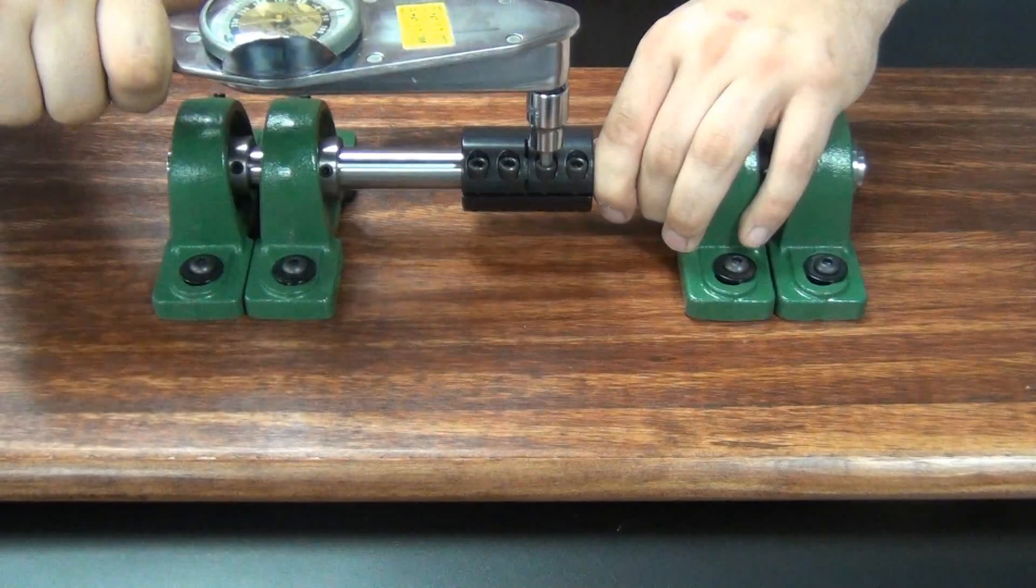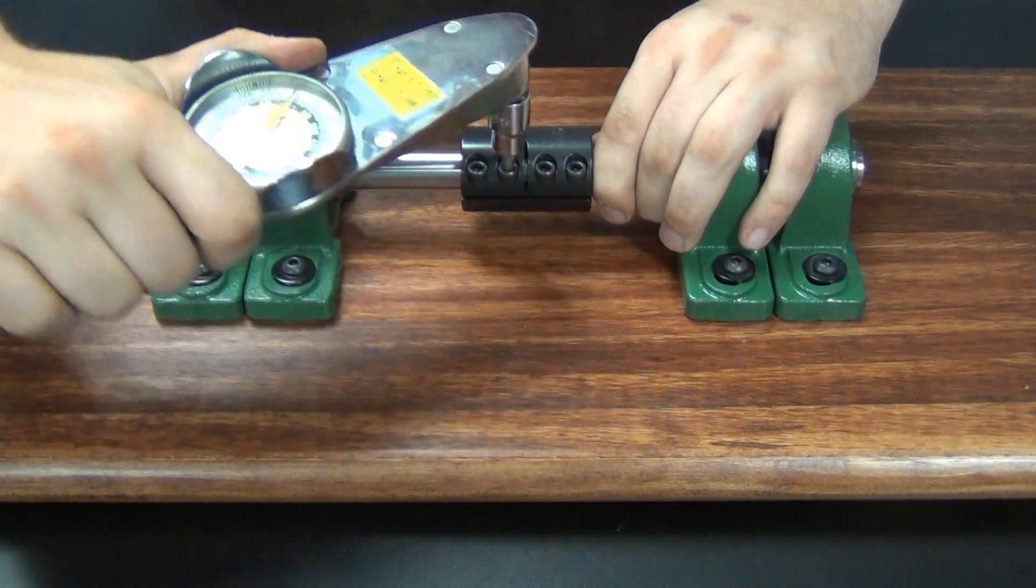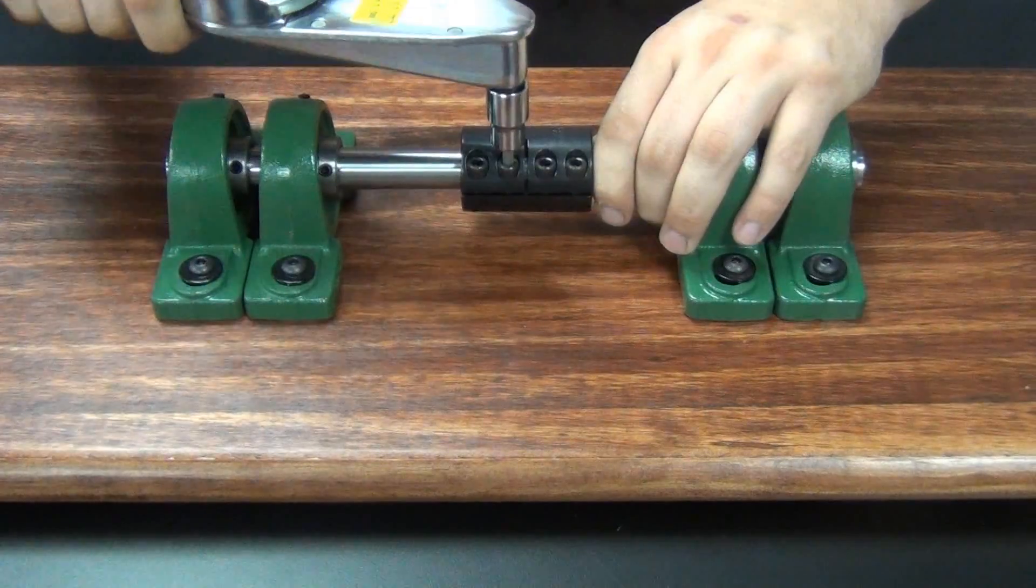Lastly, we will tighten the screws to the full recommended seating torque of 76 inch pounds, following the same pattern from the inside to the outside.